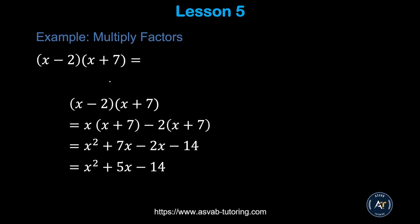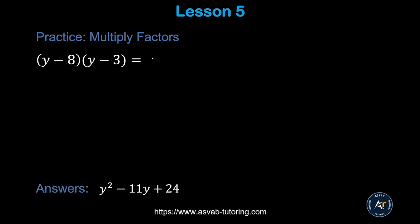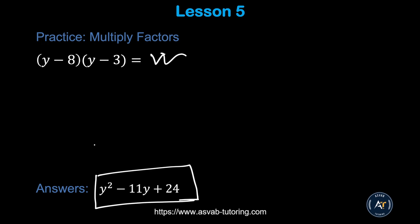Here's another example. This time there is a negative and positive inside the parentheses. Multiply x with the whole thing and negative 2 with the whole thing. So x times x is x², x times 7 is 7x, negative 2 times x is negative 2x, and positive times negative gives you negative 14. Now simplify the like terms: 7x and negative 2x have different signs, so subtract to get 5x. The answer is x² + 5x − 14. Pause the video and try the practice problem.